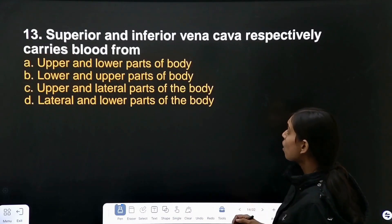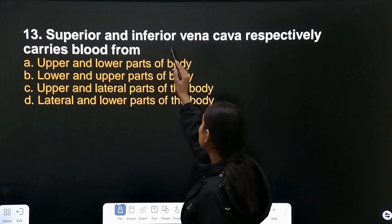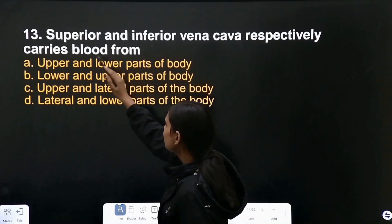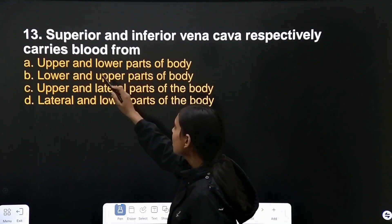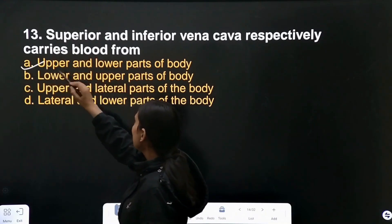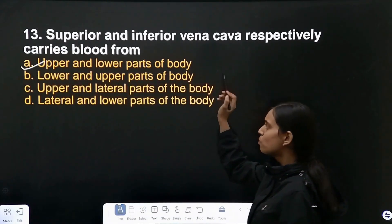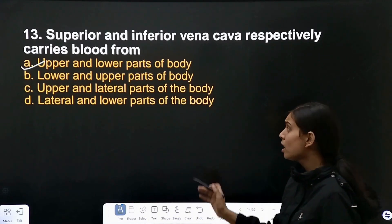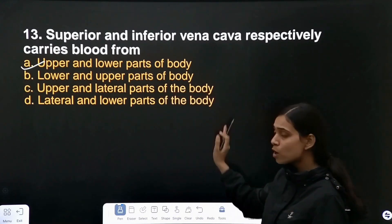Superior and inferior vena cava respectively carry blood from the upper and lower parts of the body. Yes, that is the correct answer — upper and lower parts of the body.